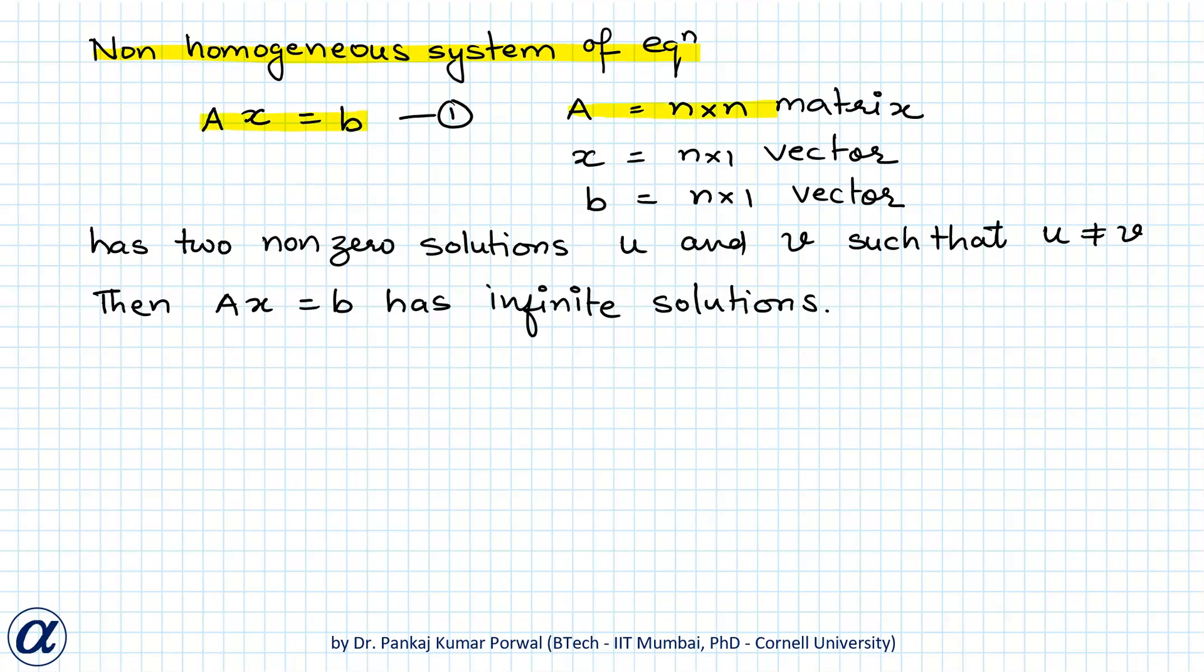where A is an n by n matrix, X is an n by 1 vector, and B is also an n by 1 vector. If the system AX equals B has two non-zero solutions, say vector U and vector V, such that vector U is not equal to vector V...